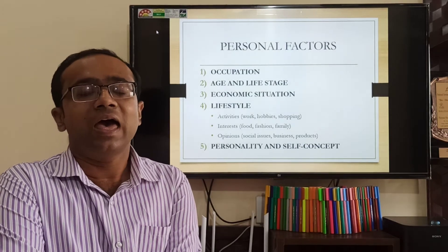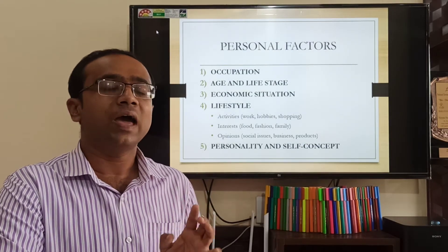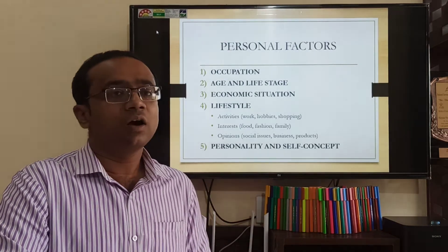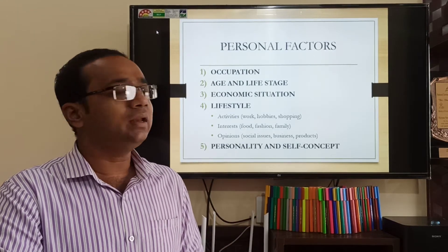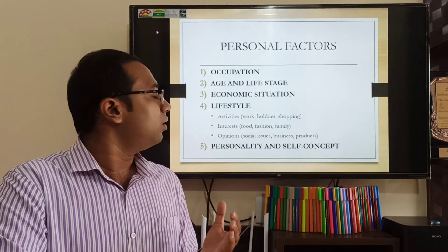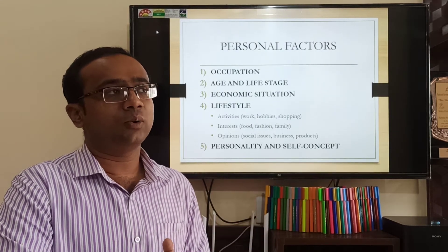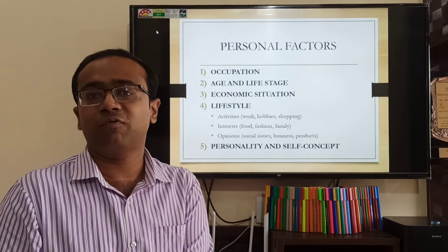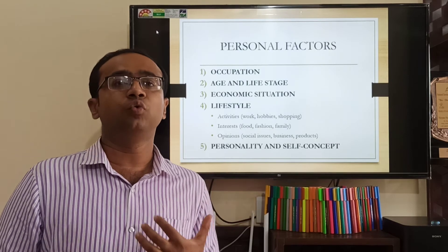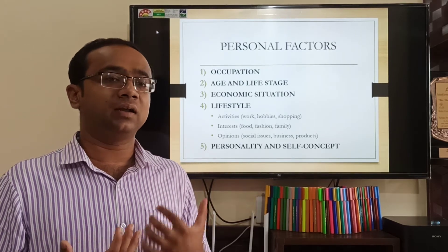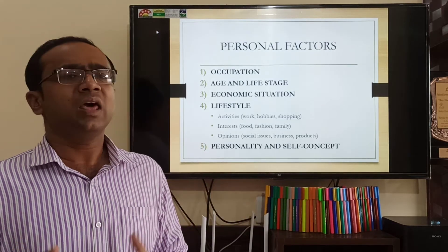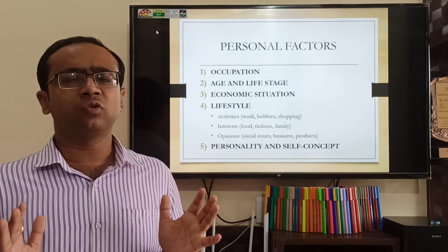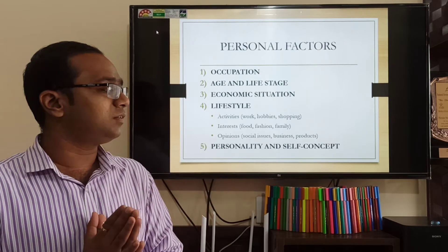The fourth personal factor is lifestyle, best understood in three words: A.I.O. — Activities, Interests, and Opinions. Activities is something you are doing: your work and hobbies. Interests is what interests you — what kind of food, what kind of fashion. Opinions covers your particular way of thinking on social issues, business, and products. When you sum up all this, A.I.O. is equivalent to your lifestyle. Last but not least is personality and self-concept. Everyone wants the brand they are using or wearing to relate to and reflect their own personality. If one is a fashion-oriented person, they will use fashionable brands. If one is a simple and sober person, they may wear simple clothes with not much colour — this is your personality and self-concept.